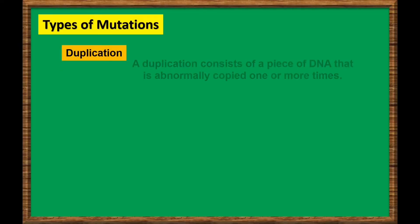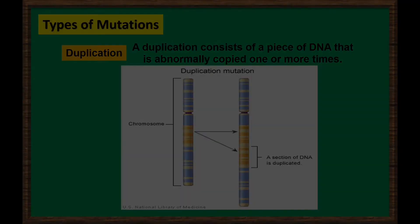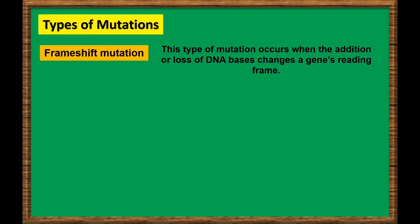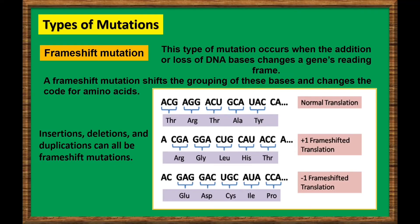The next type is duplication. A duplication consists of a piece of DNA that is abnormally copied one or more times. This type of mutation may alter the function of the resulting protein. Frame-shift mutation: this type of mutation occurs when the addition or loss of DNA bases changes a gene's reading frame. A reading frame consists of groups of three bases that each code for one amino acid. A frame-shift mutation shifts the grouping of these bases and changes the code for amino acids. The resulting protein is usually non-functional. Remember that insertions, deletions, and duplications can all be frame-shift mutations.